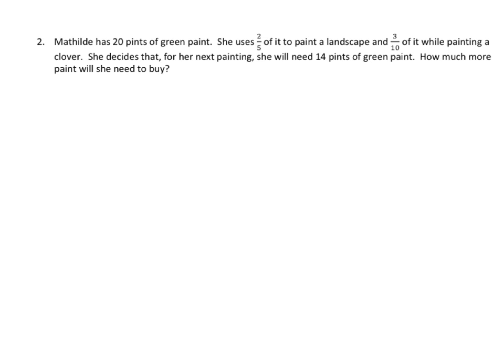This problem is a little more complex. I'm going to show you a few ways to approach it. Matilda has 20 pints of green paint. She uses 2 fifths of it to paint a landscape, and 3 tenths of it while painting a clover. She decides that for her next painting, she will need 14 pints of green paint. How much more paint will she need to buy? Well first of all, we need to look at what she has. So this is the amount she used.